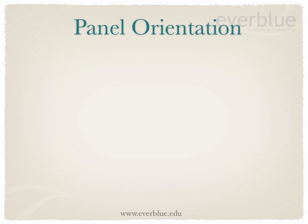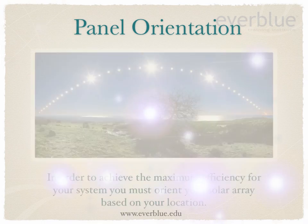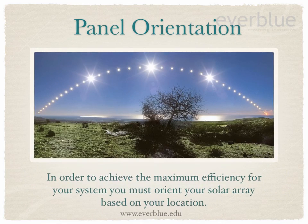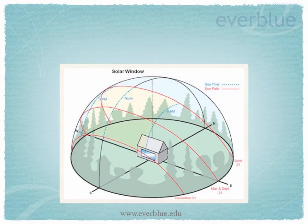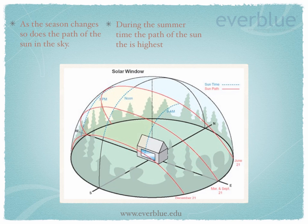Panel orientation is very important in order to achieve the maximum efficiency for your system. As the seasons change, so does the path of the sun. During the winter months, the path reaches its lowest point. Finding your solar window is critical to the operation of your system.